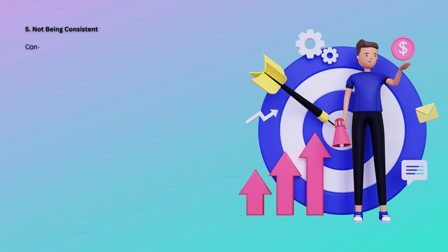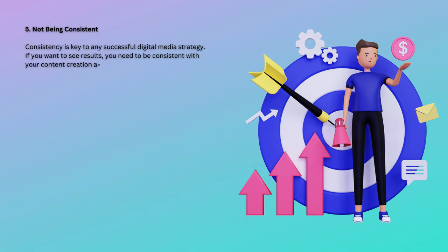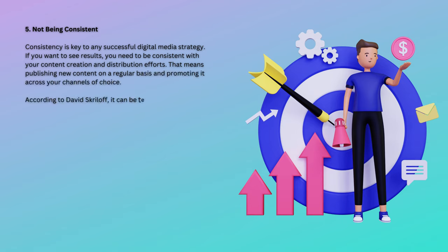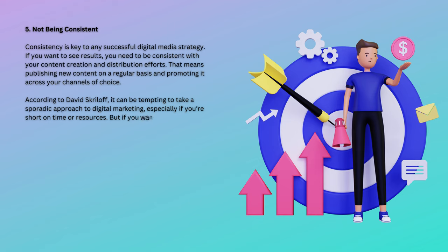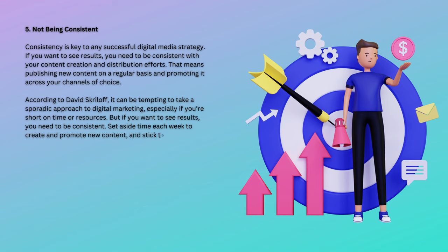5. Not Being Consistent. Consistency is key to any successful digital media strategy. If you want to see results, you need to be consistent with your content creation and distribution efforts. That means publishing new content on a regular basis and promoting it across your channels of choice. According to David Skrilloff, it can be tempting to take a sporadic approach to digital marketing, especially if you're short on time or resources. But if you want to see results, you need to be consistent. Set aside time each week to create and promote new content, and stick to it.